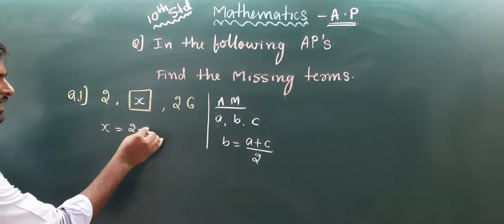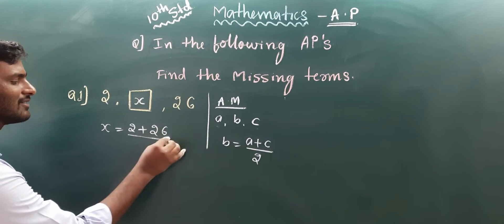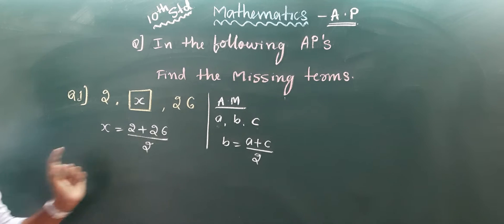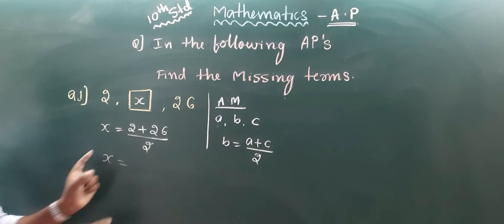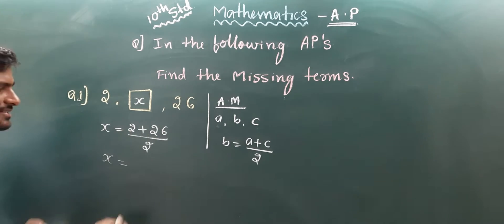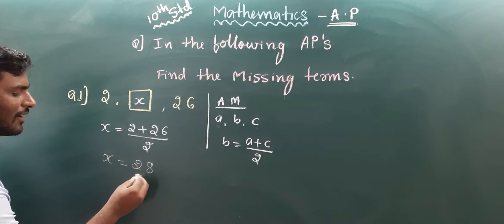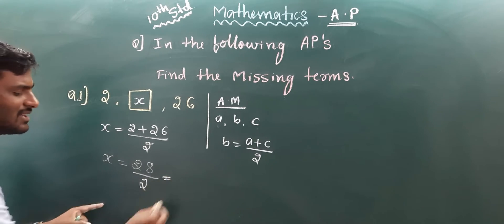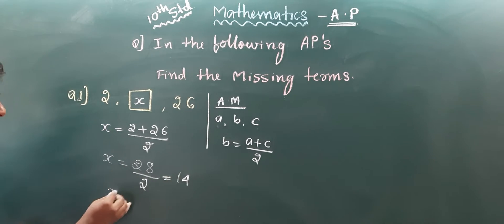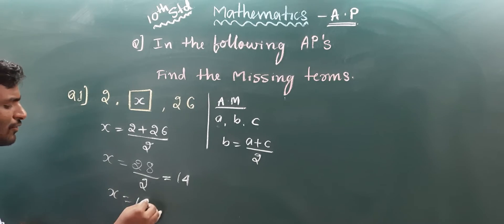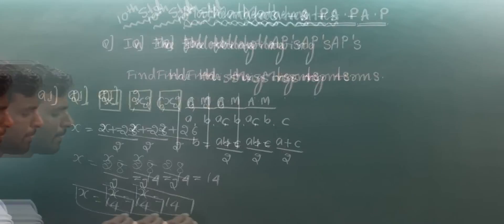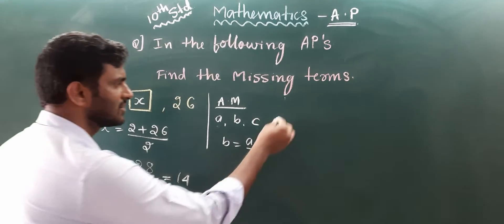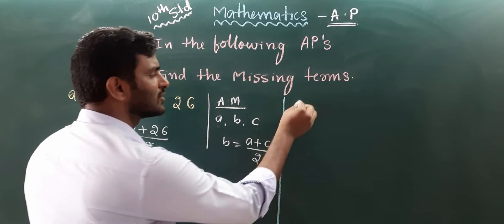So x equals 2 plus 26, divided by 2. That is 28 divided by 2, which gives 14. So the missing middle term x equals 14. Now we move on to the next question.